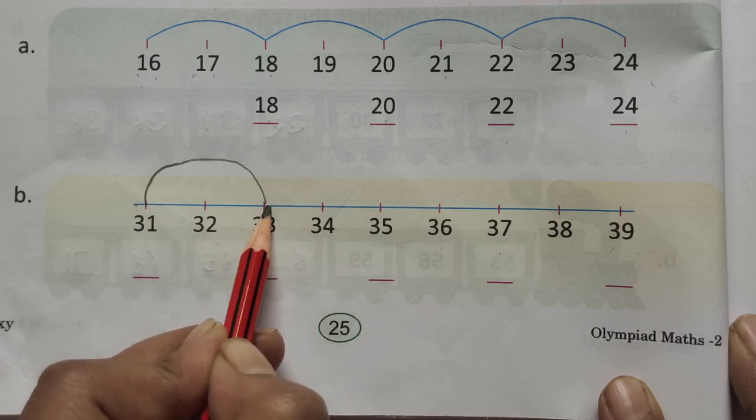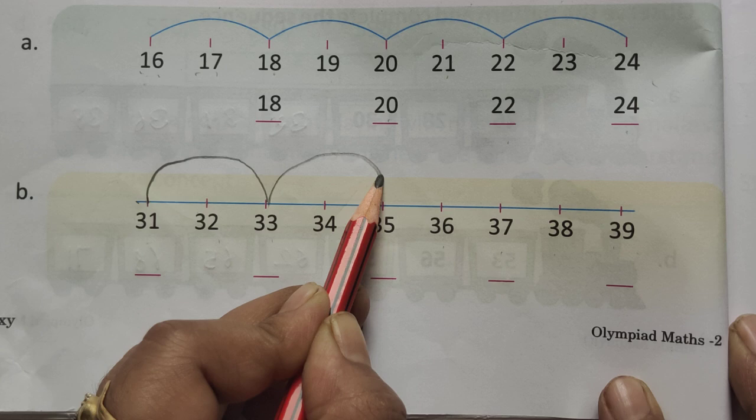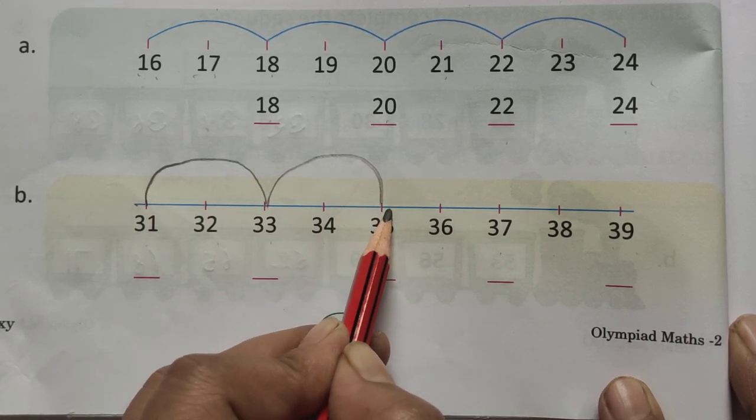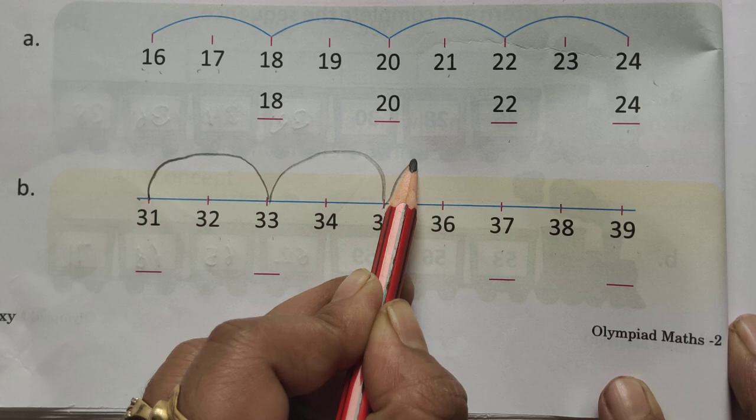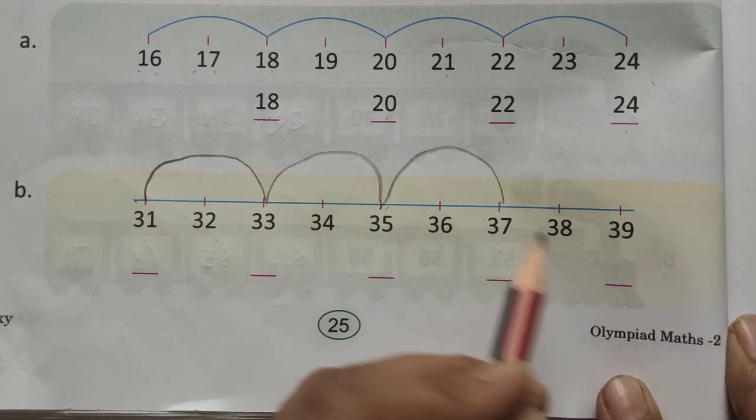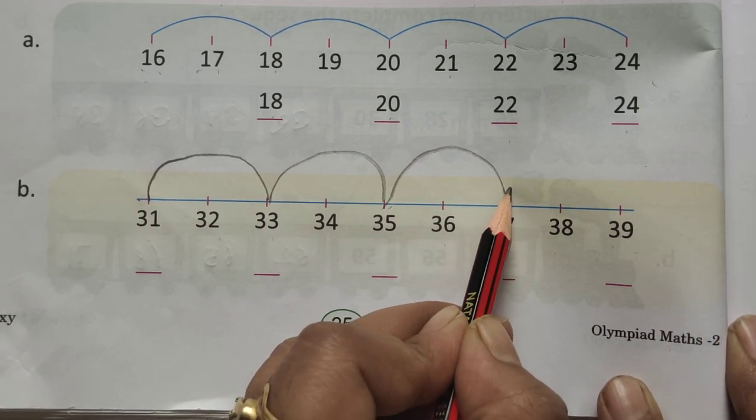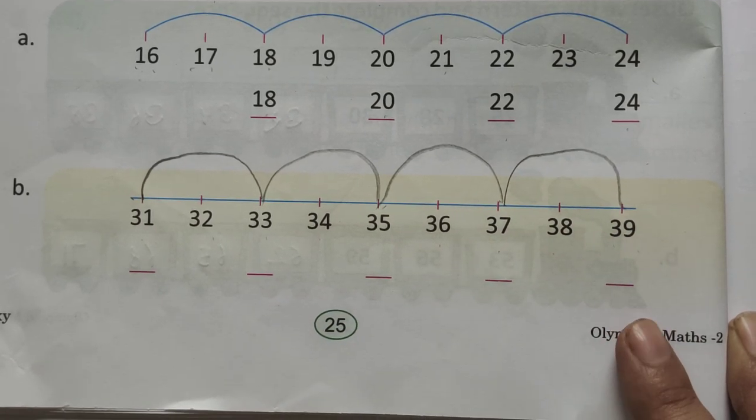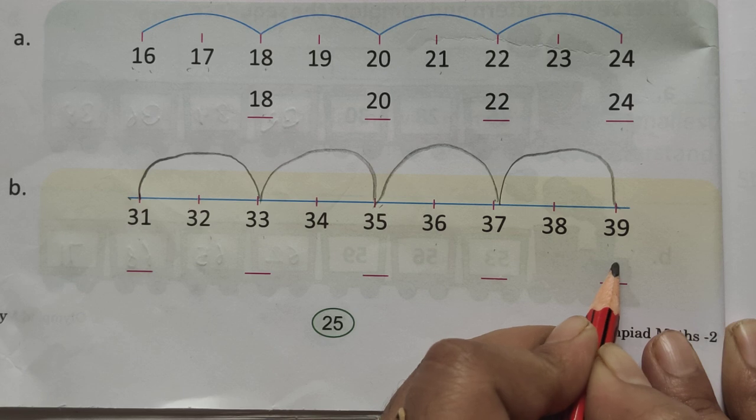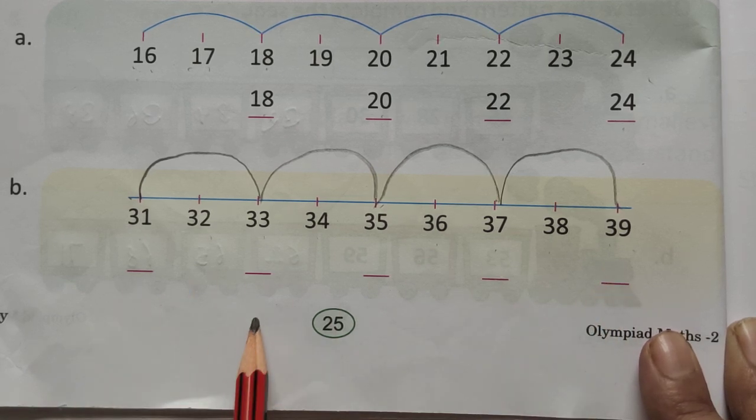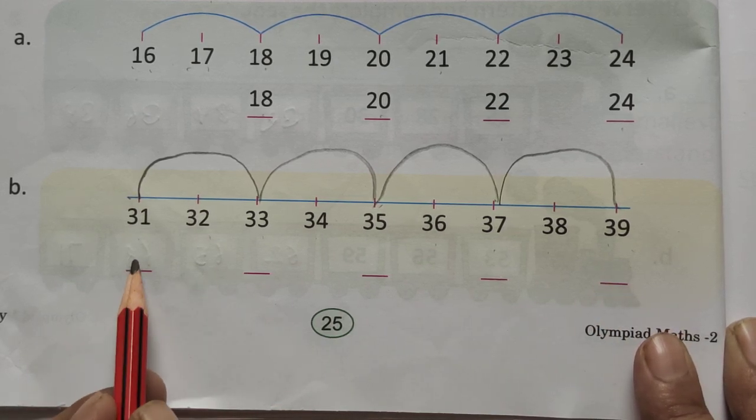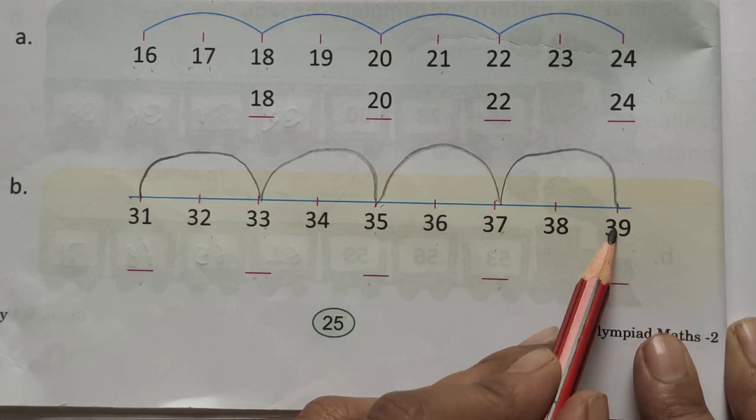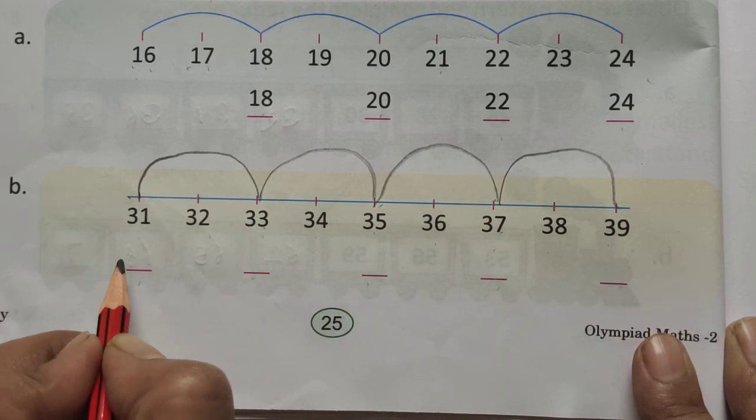33, 1 number, and 2 number. 35, jumping, 36, and 37. Again jumping, 38, and 39. Is that clear? So, Hemaare paas kya kya aya jumping mein? 31, 33, 35, 37, and 39. Is this answer?